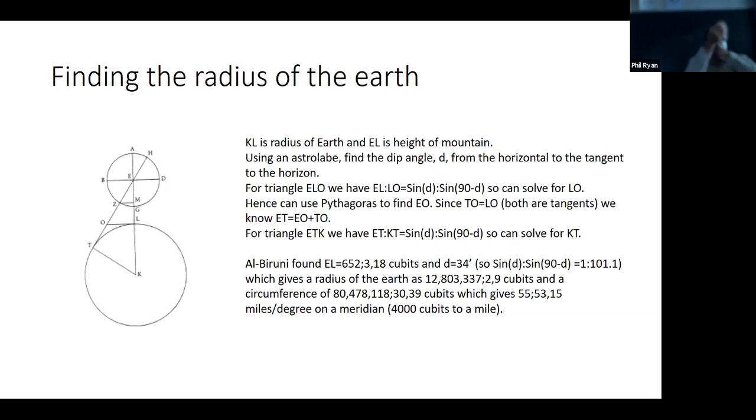shoot angles with, you know, you can make your angles with. And you can find this dip angle, which is the angle from the horizontal to the horizon. So we measure that angle D. Okay, and so then we use the sine law. Okay, so for this triangle here ELO, we have EL over LO equals sine D divided by sine 90 minus D.